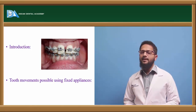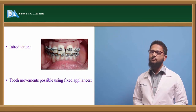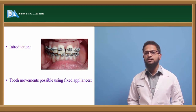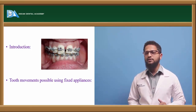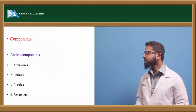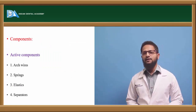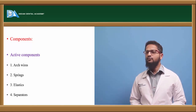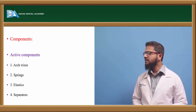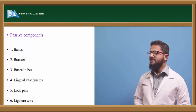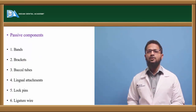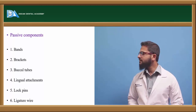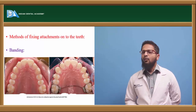Fixed appliances can bring about various types of tooth movements, including tipping, bodily tooth movement, correction of rotations, intrusion, extrusion, and torquing — all these movements are possible. The components of fixed appliances fall into two broad categories: active components, which include arch wires, springs, elastics, and separators; and passive components, which include bands, brackets, buccal tubes, lingual attachments, lock pins, and ligature wire.